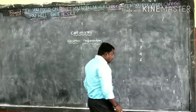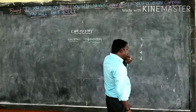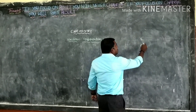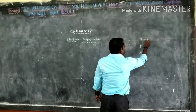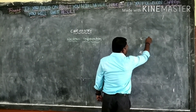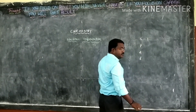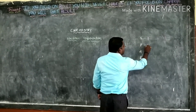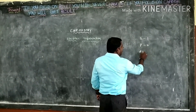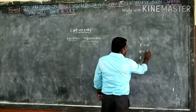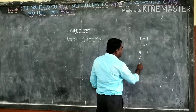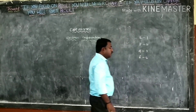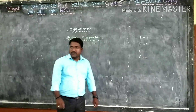For our convenience, you take S orbital and give it rule number one, P orbital rule number two, D orbital rule number three, and F orbital rule number four.